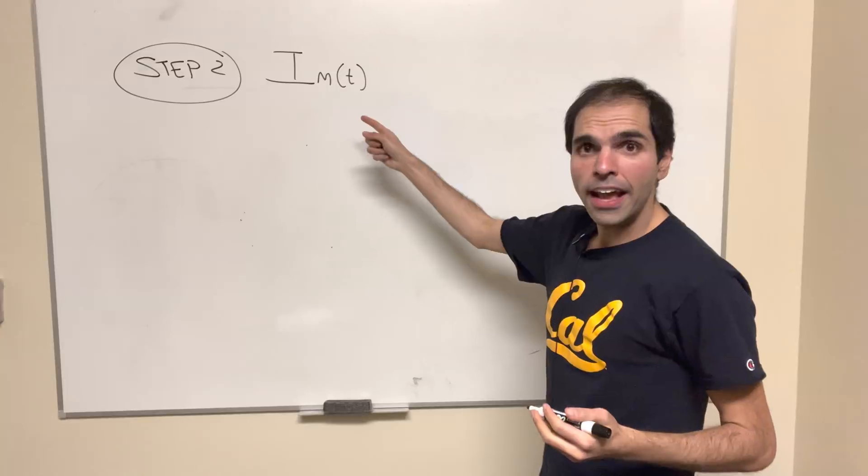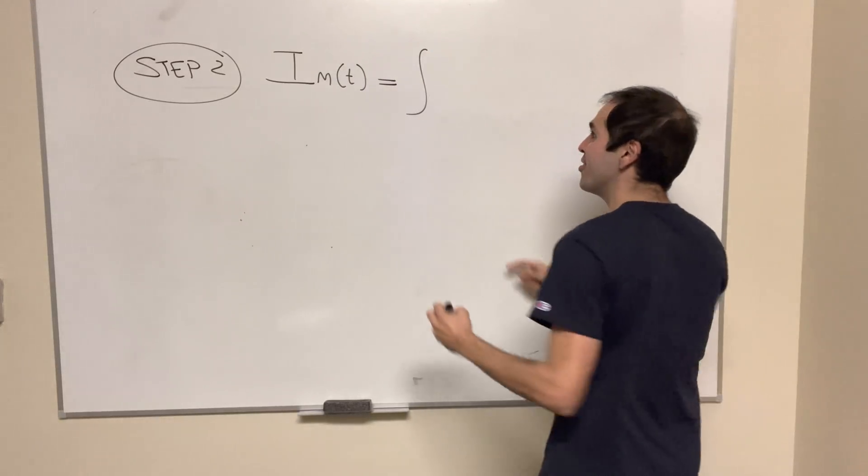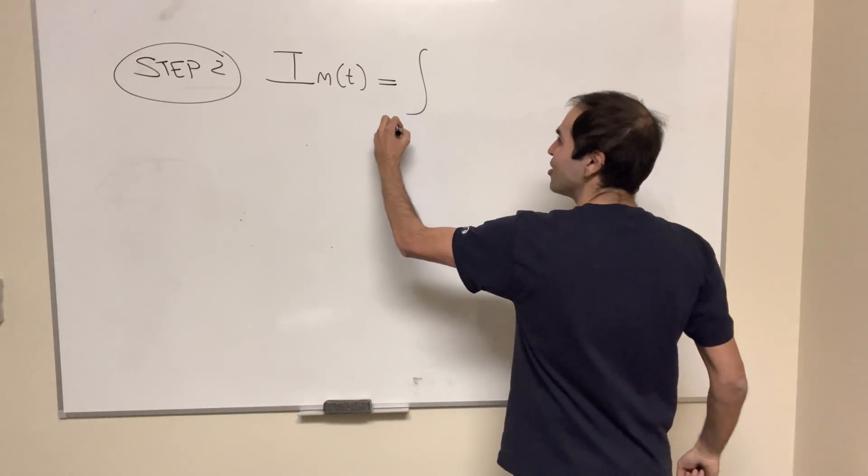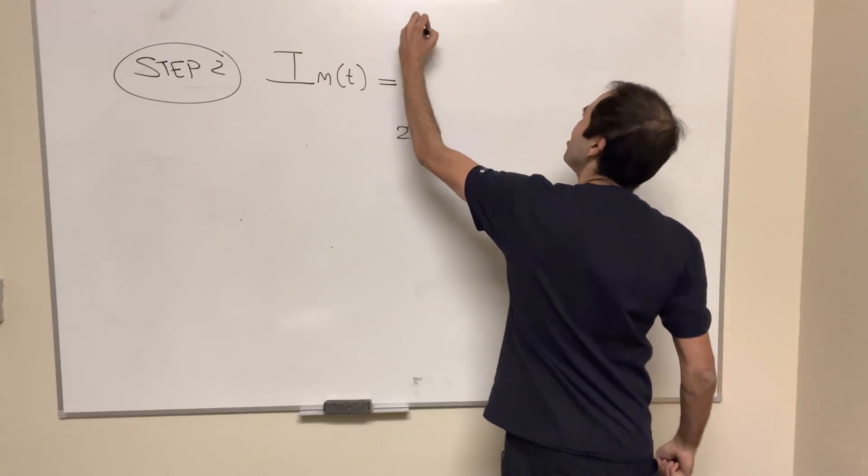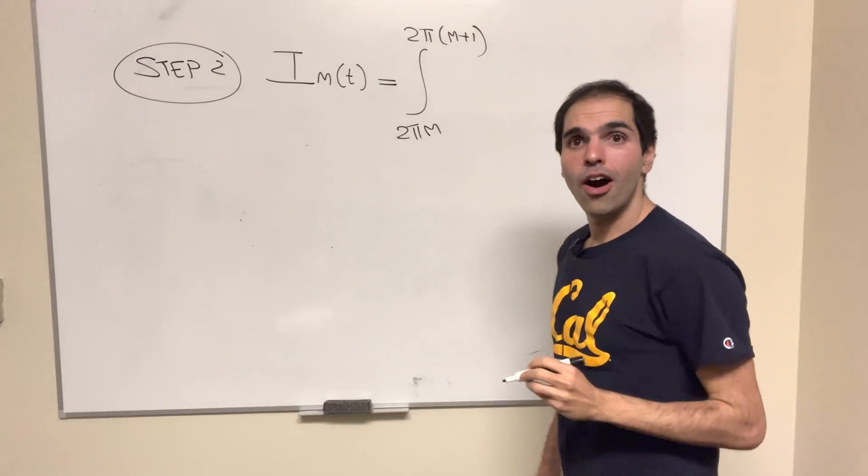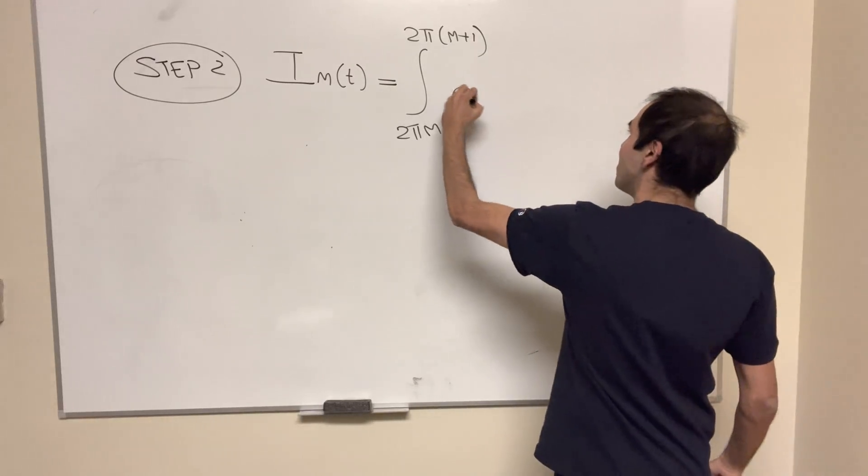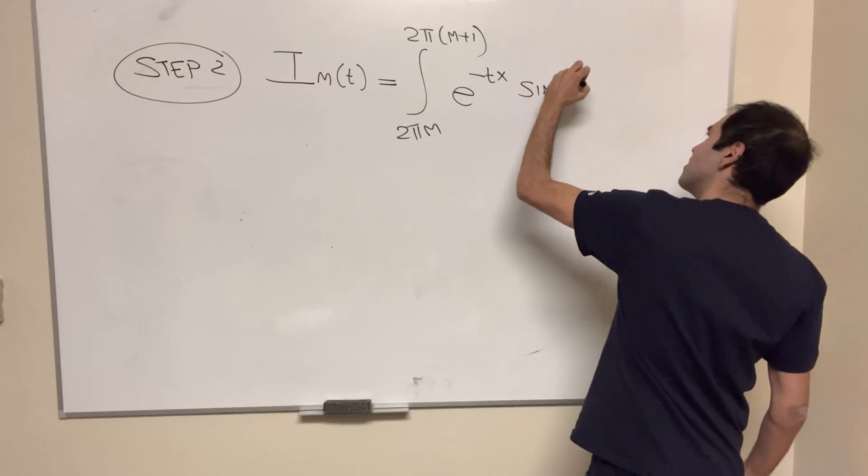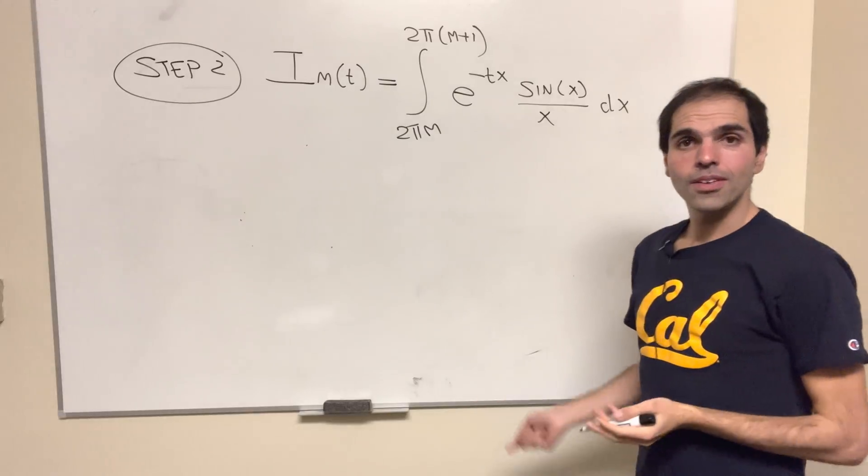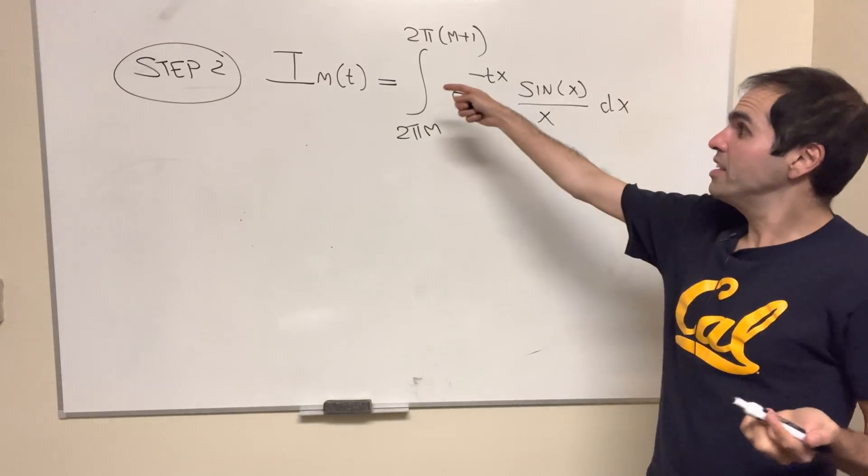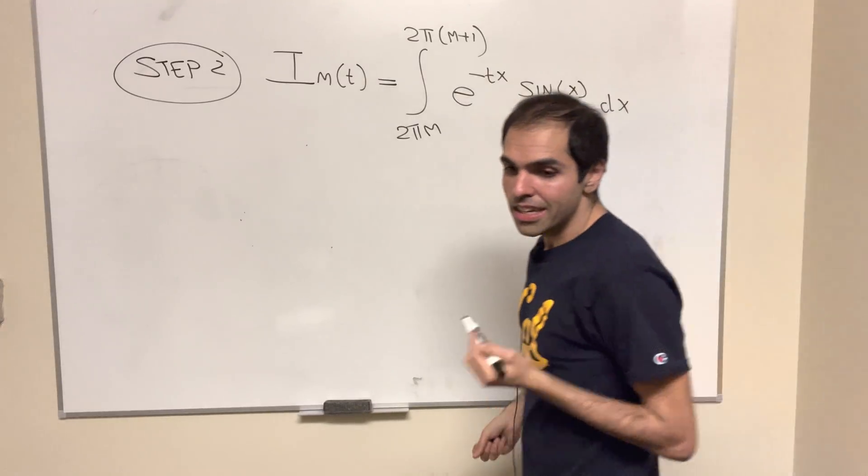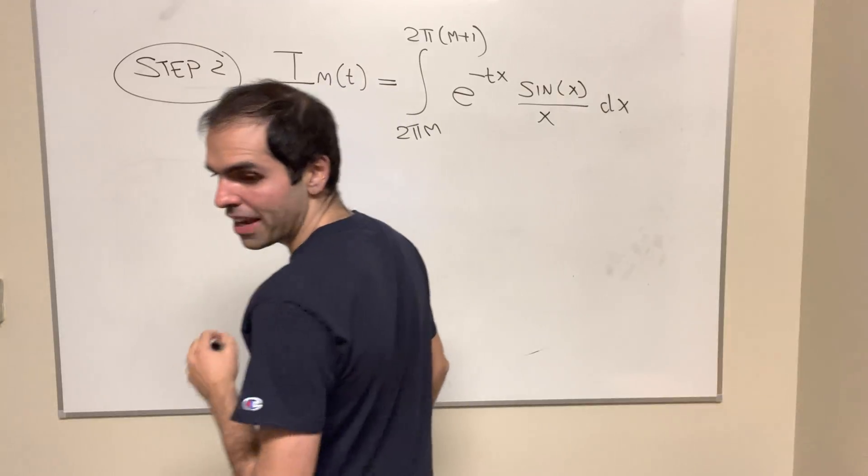So here are i_n, what are those? So it's an integral, remember, 2π, 4π, or in general, 2πn, of course, and 2π(n+1) over function. So e^(-tx) sin(x)/x dx. And now you will see soon why, but instead of studying the function itself, let's study the derivatives. So let's differentiate this with respect to t.